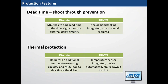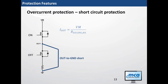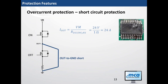For overcurrent protection, our fully protected devices handle output-to-output shorts, output to ground, and output to supply. For example, in an out-to-ground short, the only thing limiting current is the RDS on of the high-side FET. With 24 volts and a 1-ohm RDS on, you're looking at 24 amps through that transistor, which often results in extreme heat, bubbling of the mold compound, and significant damage to the IC.